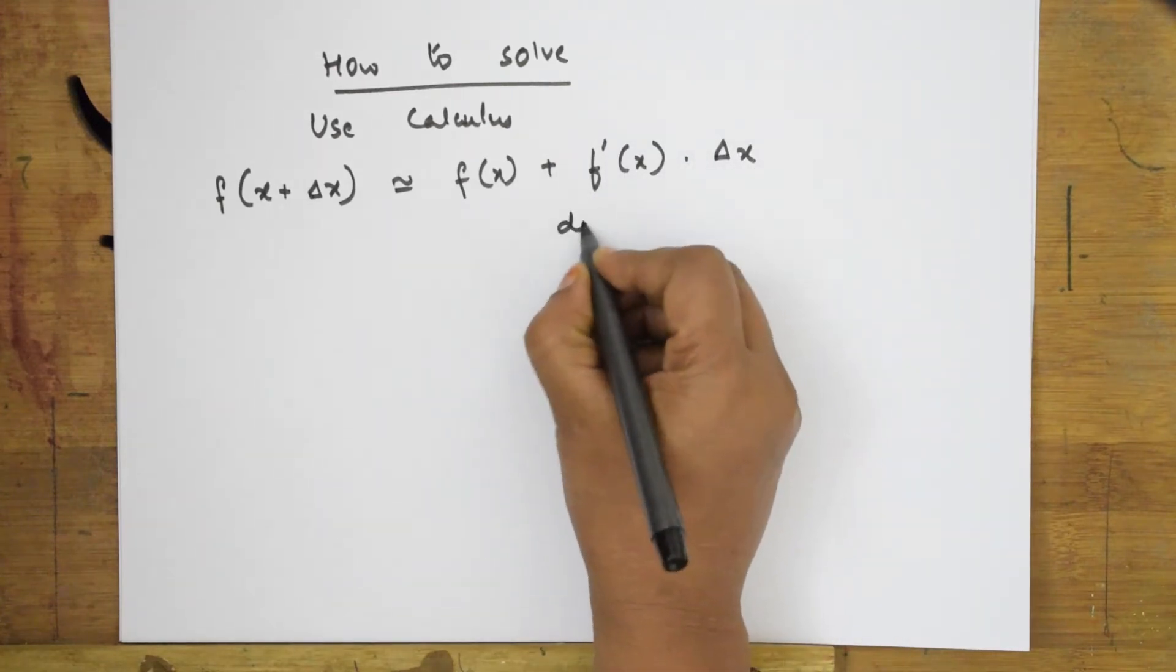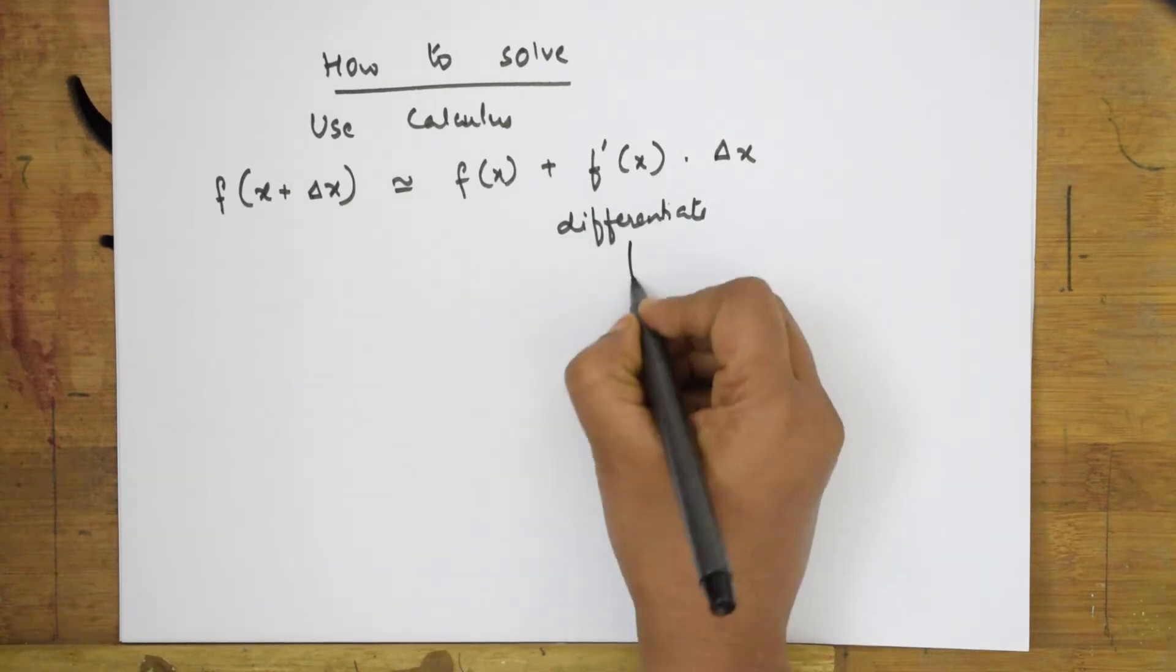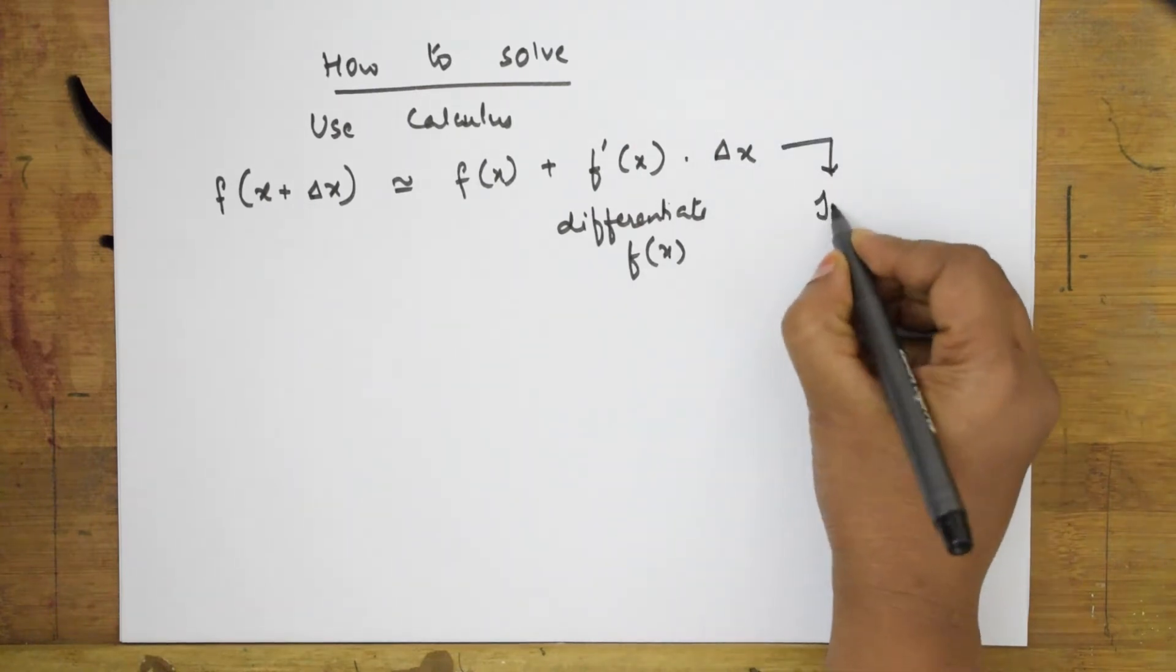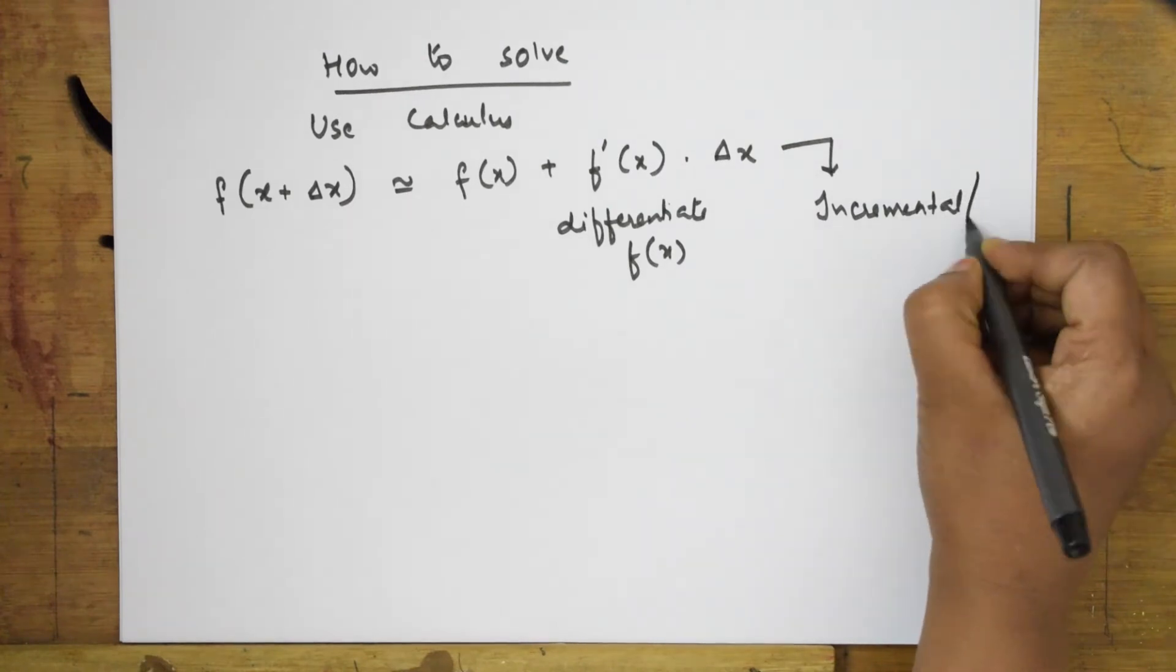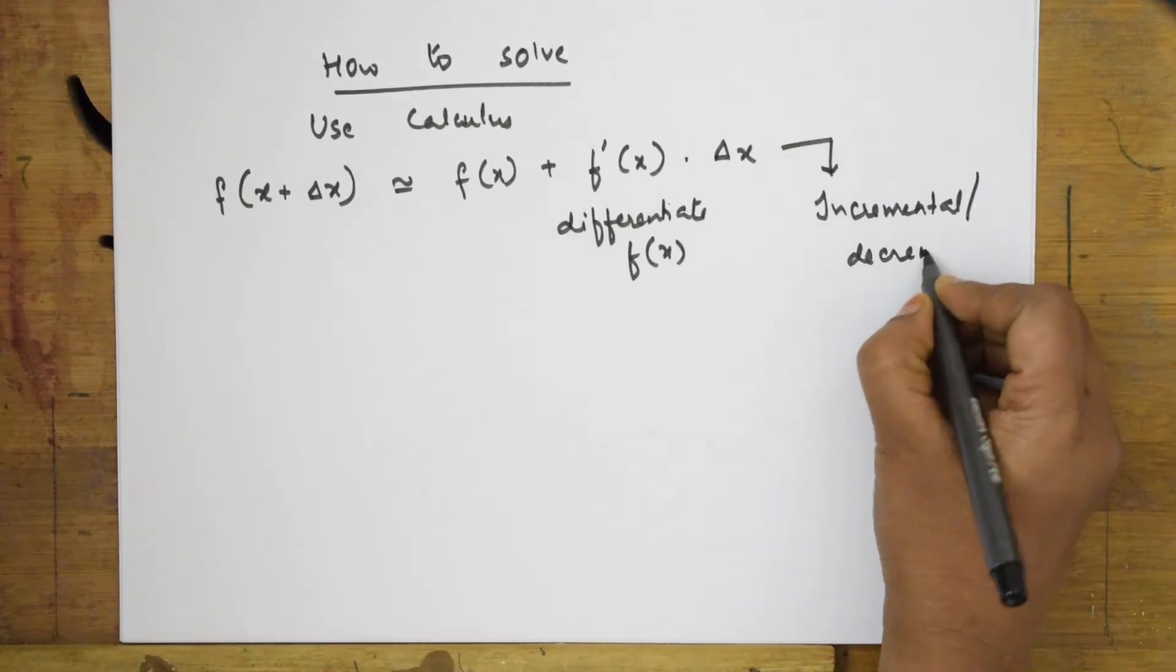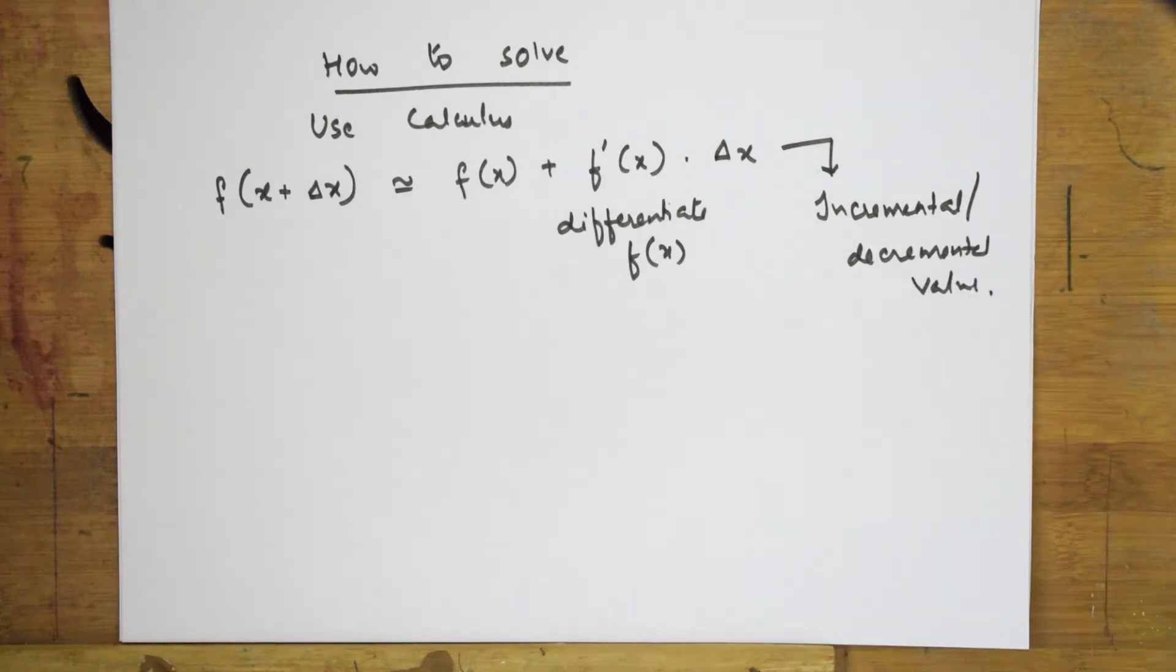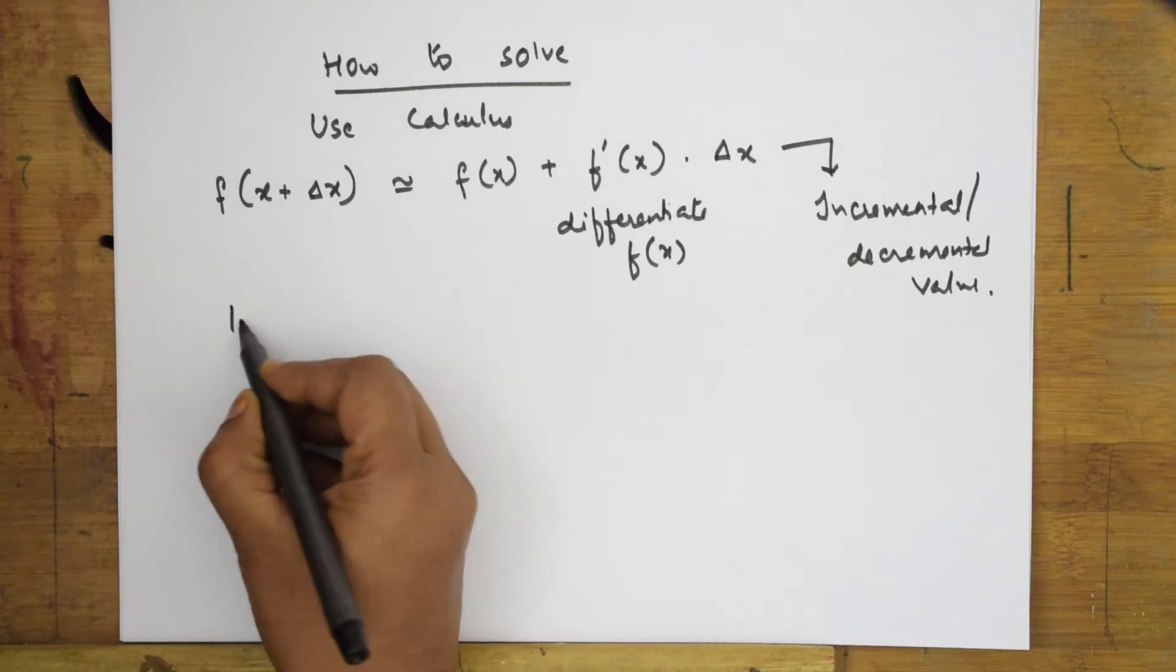This is differentiate f(x), and this x value can be an incremental value or decremental value. I will tell you what is that incremental or decremental value. Now see, basically, we write this under base e. Whatever we learn, the standard base e value, log, this can be written as log(x + Δx) under base e.